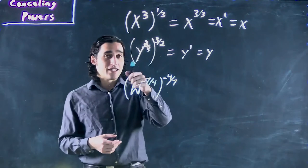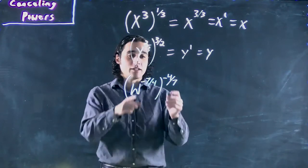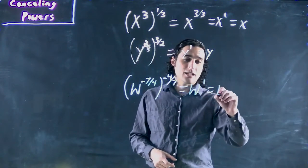And the inverse of 7 over 4 is 4 over 7. So we put this entire thing w to the negative 7 over 4 to the power of negative 4 over 7. These will cancel to become 1. Get w to the 1 or just w.